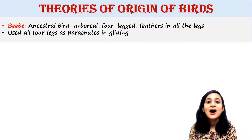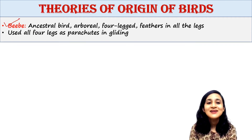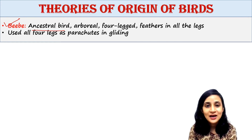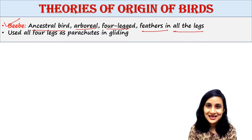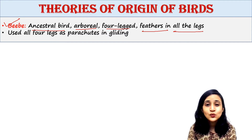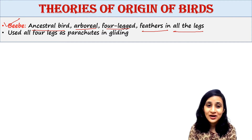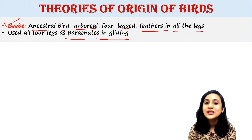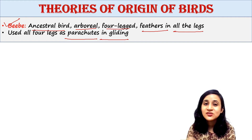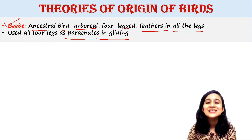The next theory was given by Bibe. He said that the ancestral bird was an arboreal four-legged creature which had feathers on all four legs, and it used all four legs as parachutes during gliding. So during jumping from one tree to another, they used all their forelegs as parachutes.